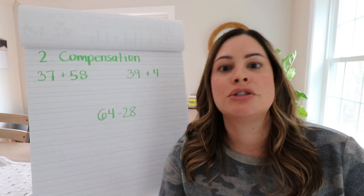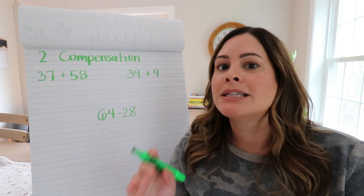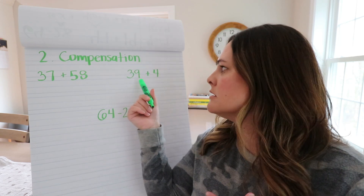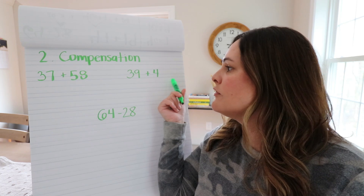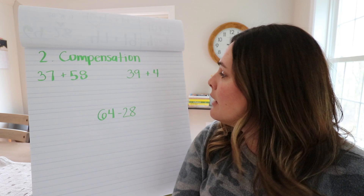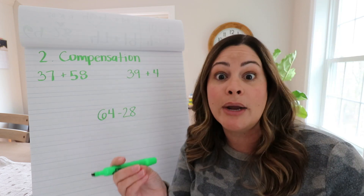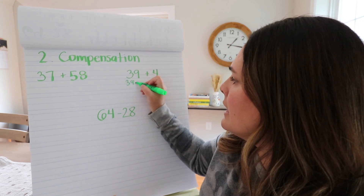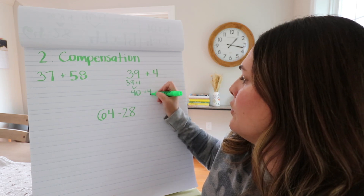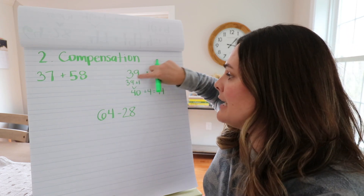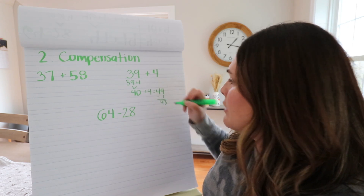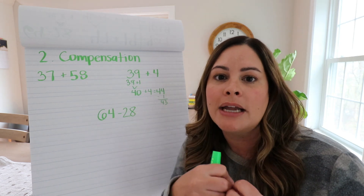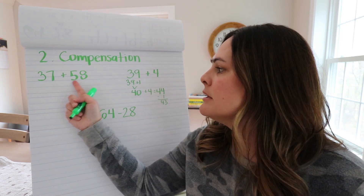Mental math strategy number two is called compensation, and it works for both addition and subtraction. For a typical first and second grade example: 39 plus 4. Students can of course count up, but what some students might be doing mentally is using a form of compensation — saying okay, 39 plus 1 is going to be 40. 40 plus 4 is 44, but we need to compensate for that 1 we added, so we subtract it at the end to get 43. Instead of just counting up, we add one to make it an easier number, then take it away at the end.